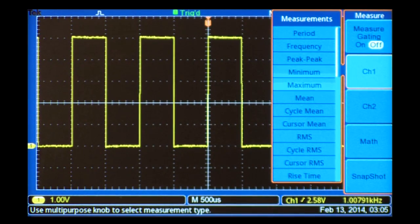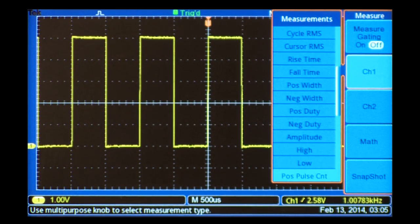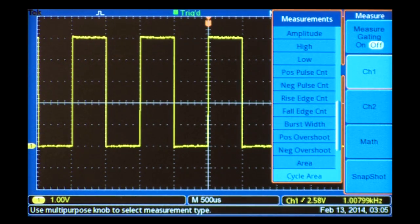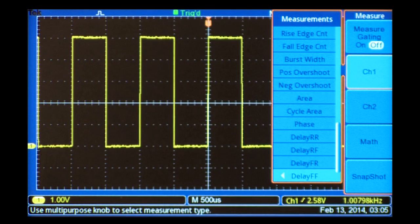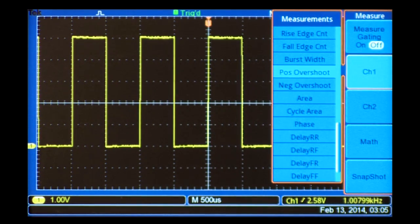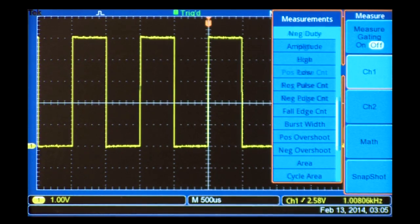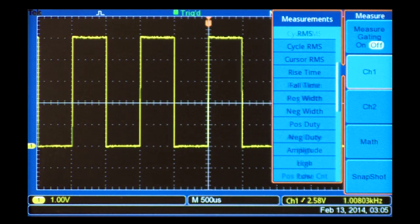Automatic measurements use the scope's processing power to perform calculations on digitized waveforms. There are 34 measurements available on the TBS-1000B oscilloscopes, going well beyond the simple delta-T and delta-V measurements we've just made with the cursors.